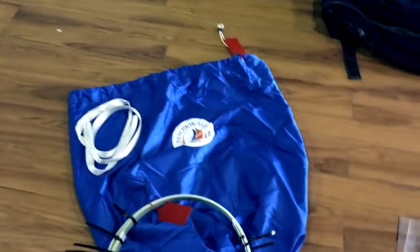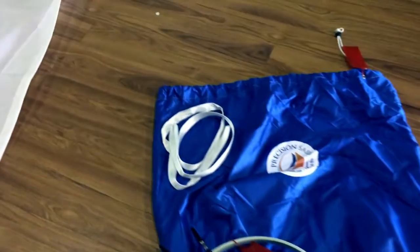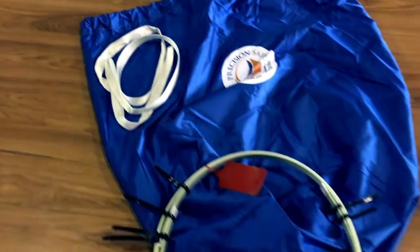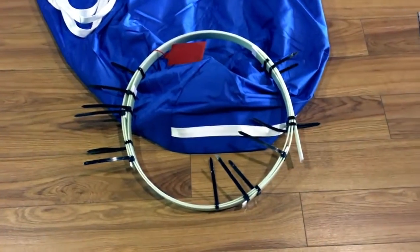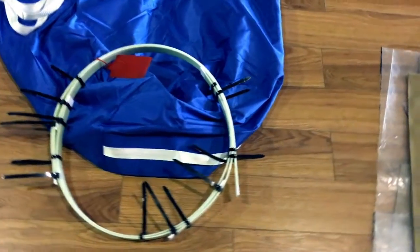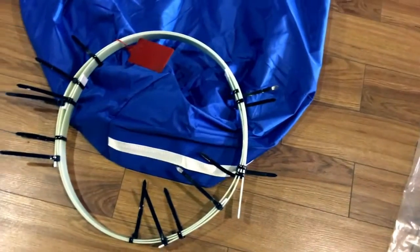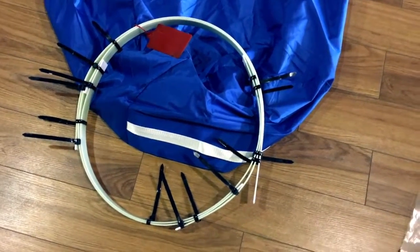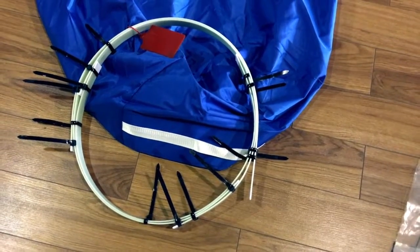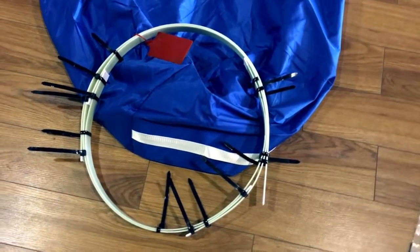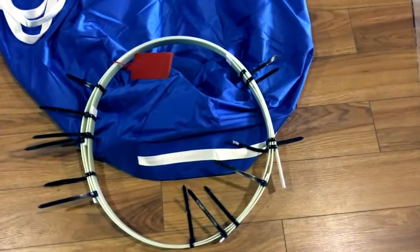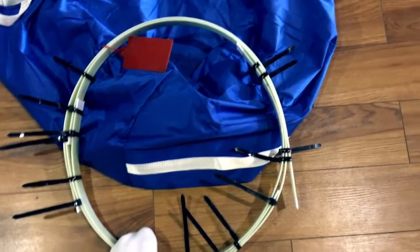Before we start, I'll show you how your mainsail is going to come. It comes in the bag with sail tie and the battens coiled and zip-strapped together. When you get this, I would recommend you take it out of your home, either take it down to the marina on some grass or in your front yard on some grass.